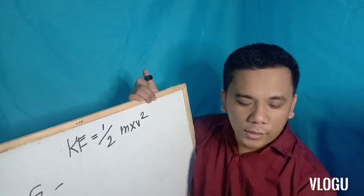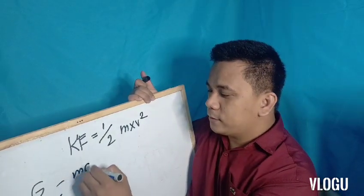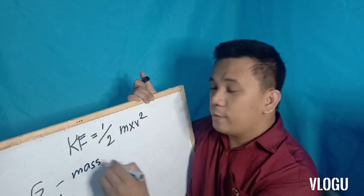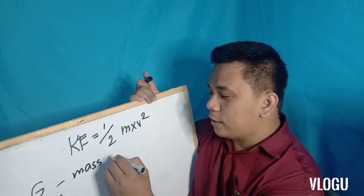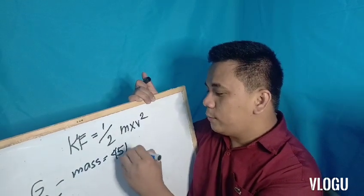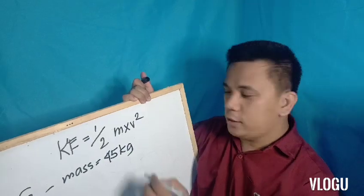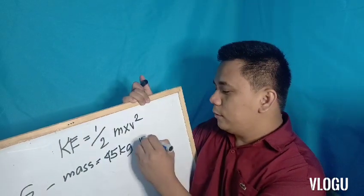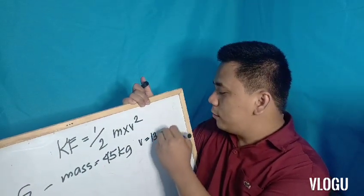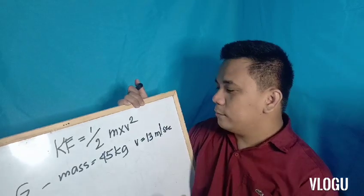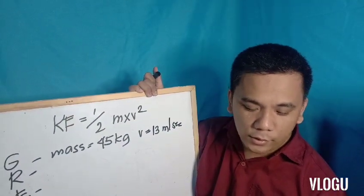What are the given values? The mass is 45 kilograms. The velocity is 13 meters per second.